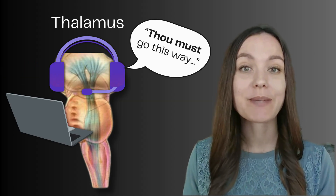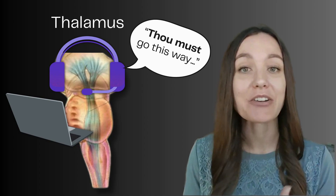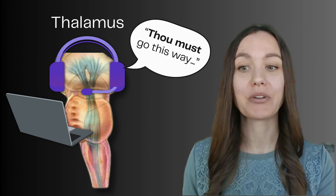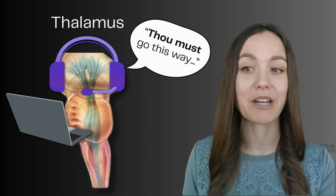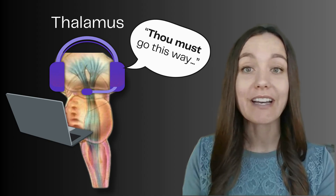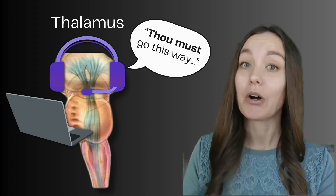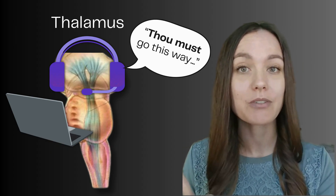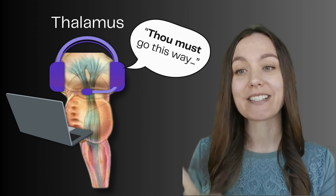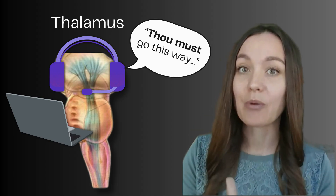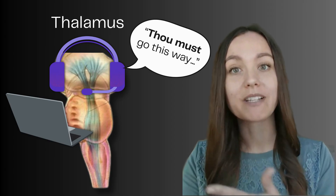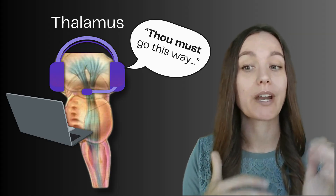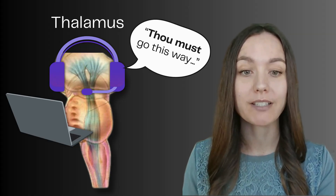To remember the function of the thalamus, I think of it like a secretary or receptionist that sits at the center of the brain and answers the phone with incoming calls from the outside world, saying, 'Hello, thalamus here. How can I help you today? Oh, you're coming from the eyes — let me send you on to the occipital lobe. Please hold.' You can even think of the thalamus saying, 'Thou must go this way, thou must go that way,' which will help you remember that it directs sensory information to the correct location for processing.